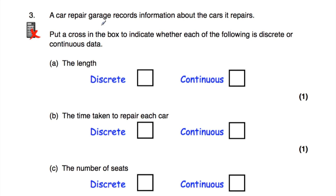Question number three: a car repair garage records information about the cars it repairs, and we need to put a cross in each box to say whether the data is discrete or continuous. The length of the car is continuous, because it can take any value on a given scale. The amount of time taken to repair each car is also continuous — it could be, for instance, 4.27 hours and so on — so that's continuous data.